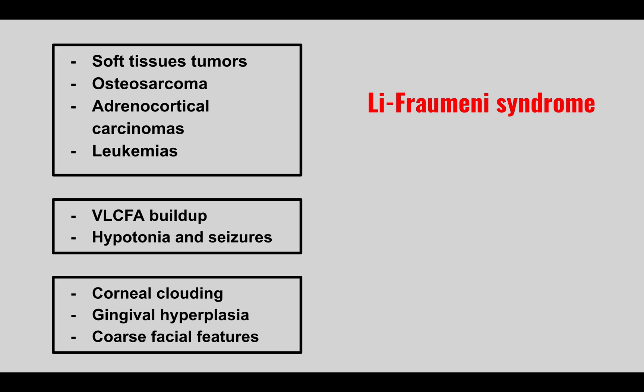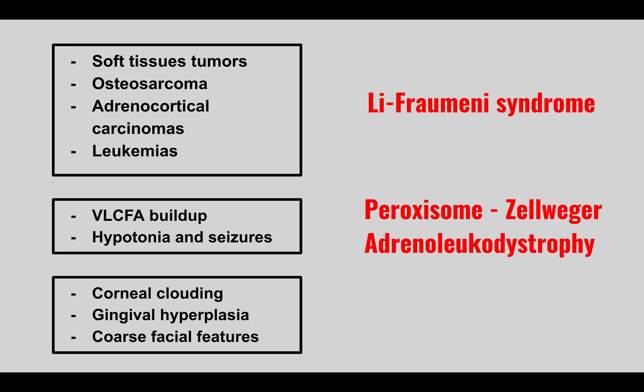The next condition features a buildup of very long chain fatty acids, hypotonia, and seizures. This is a peroxisomal disorder such as Zellweger or adrenoleukodystrophy. When peroxisomes aren't working properly, we can't perform beta-oxidation and get a buildup of very long chain fatty acids. These two conditions are similar — remember it's a peroxisomal disorder that can present on a spectrum.